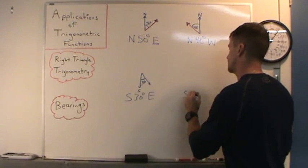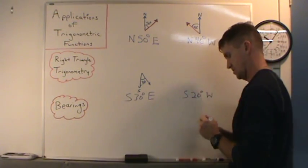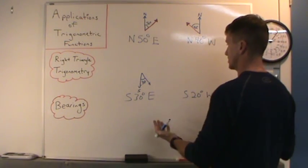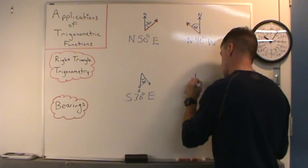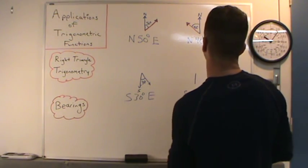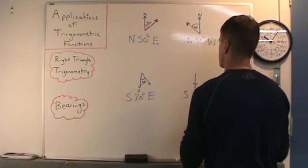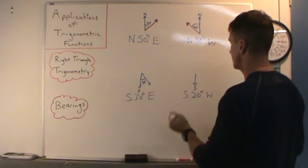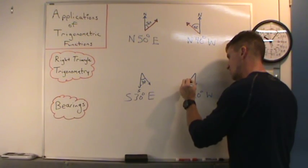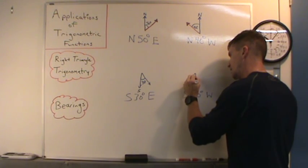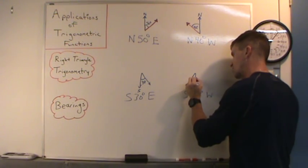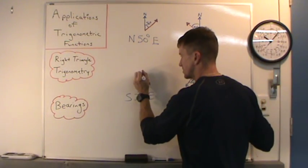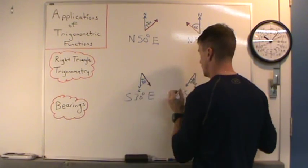And how about S 20 degrees W? We read that as 20 degrees west of due south. Start by drawing due south and go 20 degrees to the west. Not very big angle — 20 degrees right in there. Once again, these indicate a direction.